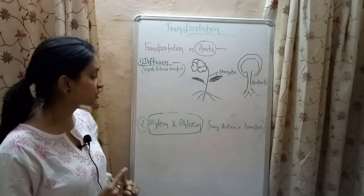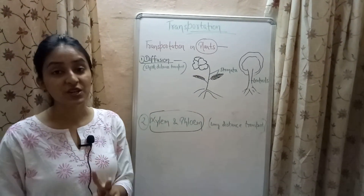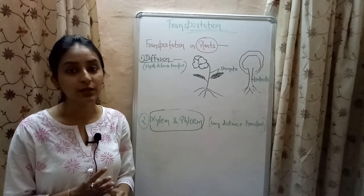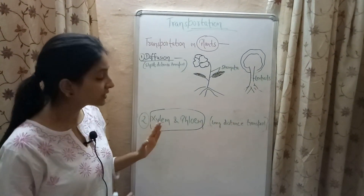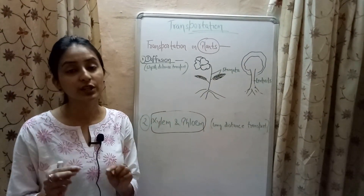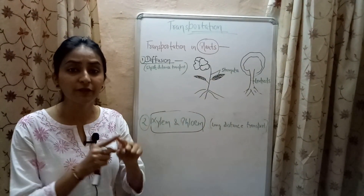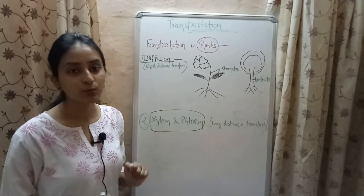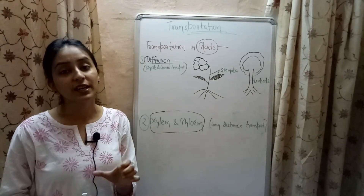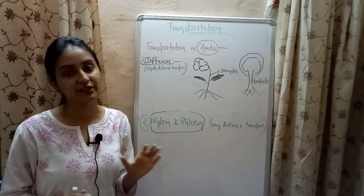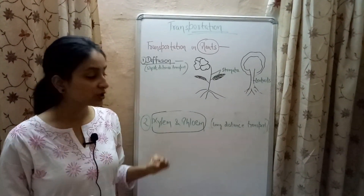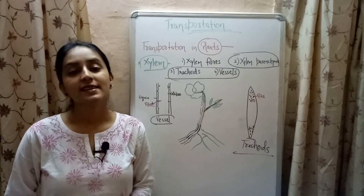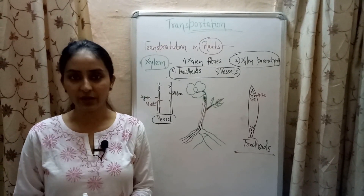Lenticels and stomata help in short distance transport of materials in plants. For long distance transport, plants have two special types of tissues known as xylem and phloem. Xylem helps in conduction of water and minerals to different parts of the plant, whereas phloem is responsible for the conduction of food materials in plants. Now let's have a look at the structure of xylem and phloem.